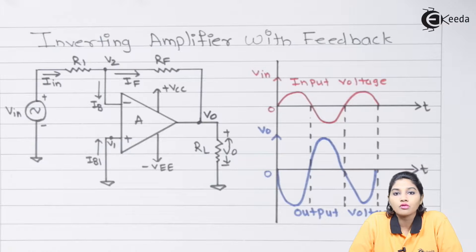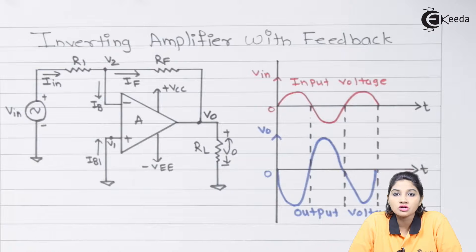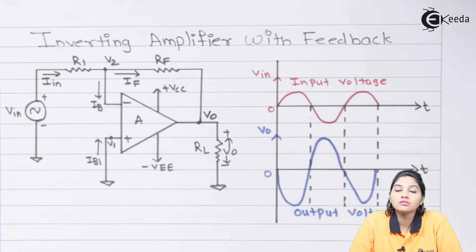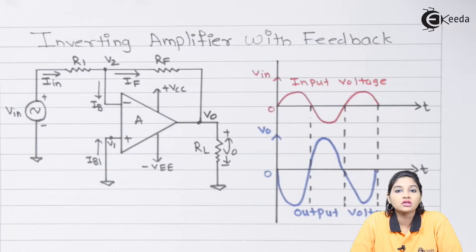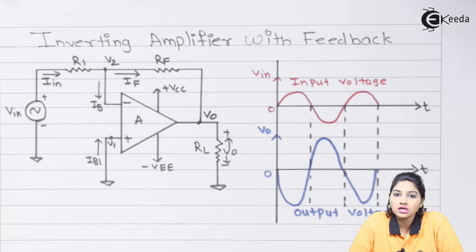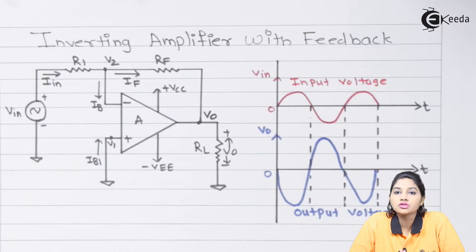The second advantage provided by negative feedback is that it increases the bandwidth. It also changes the input and output resistance, reduces the effect of temperature, variation in power supply, and also reduces the input offset voltage which can affect the output. Because of this, negative feedback is used in amplifier circuits.